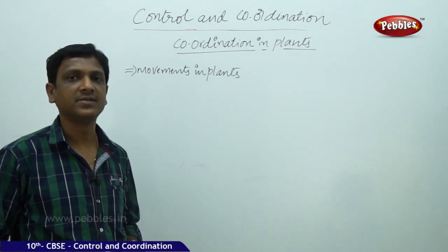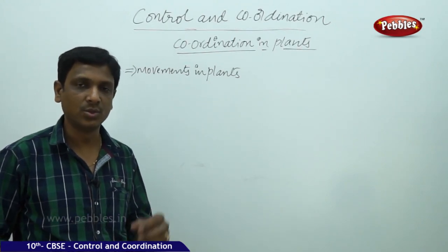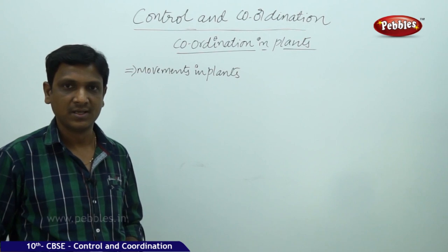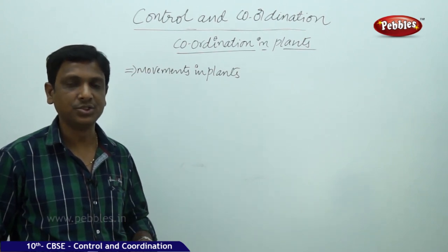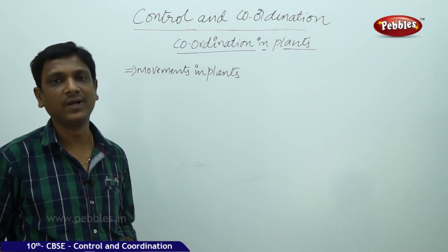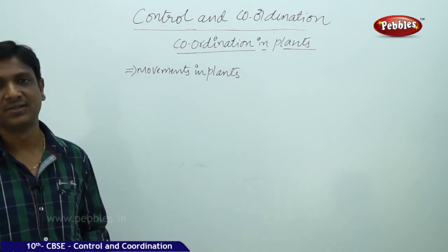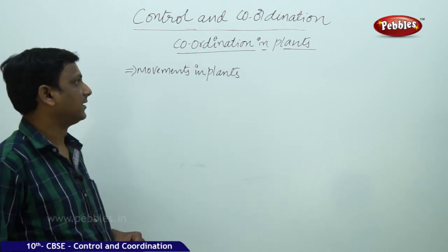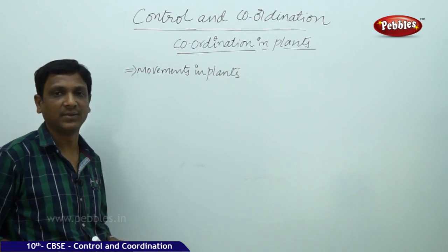We have seen the movements in animals and how movements are controlled and coordinated in animals. Animals have a specialized tissue called nervous tissue by which they can control and coordinate their movements. Now let us see about plants and how coordination takes place in plants.